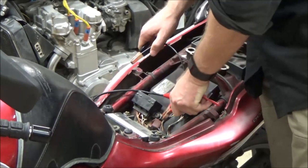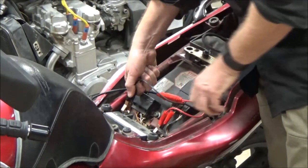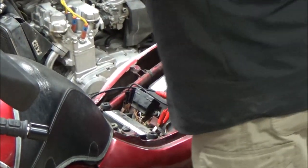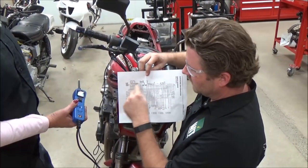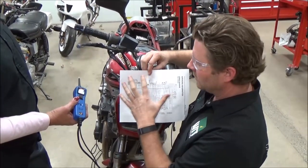You can see here we're just going to hook up the tool simple enough to the positive and negative. The first thing that we've already went ahead and done is found the wiring diagram so we know which color wires that we're dealing with.